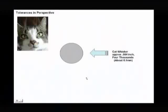You know what that is right there? That looks like a gray spot. No, that's a cat whisker. I had to put these tolerances in perspective, because sometimes we're tolerancing things to four thousandths of an inch, two thousandths, one thousandth, a tenth of a millimeter. How small is that exactly?